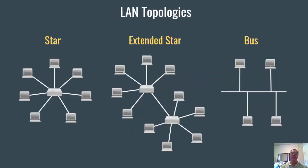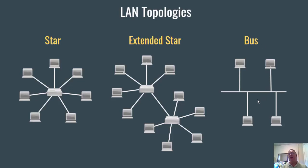Another topic you need to know is about topologies. You're expected to know LAN topologies like a star topology with a switch in the center, an extended star, which is two stars connected together — the switch in the center and devices connecting into it — and a bus topology, which was originally created with a coax cable where you would tap in and all devices were on the bus, and every device would see the data. A logical bus topology could also be one that uses a hub, since a hub regenerates and sends packets out of all ports, so every device sees it much like a bus.